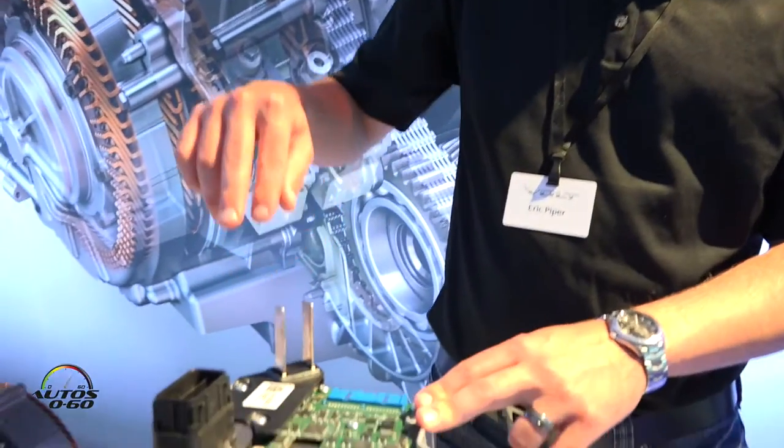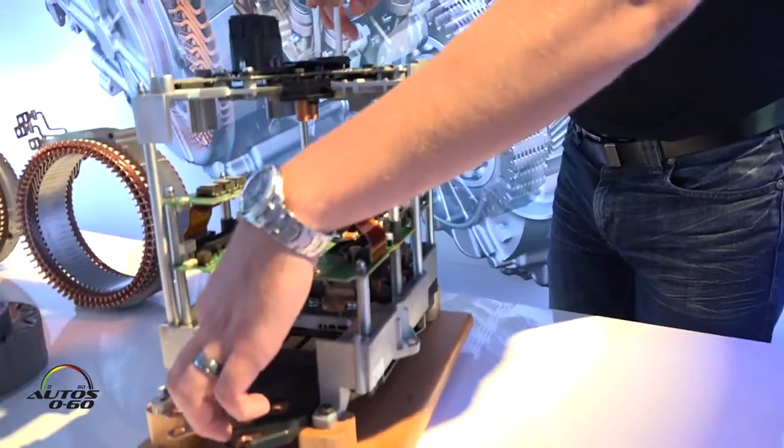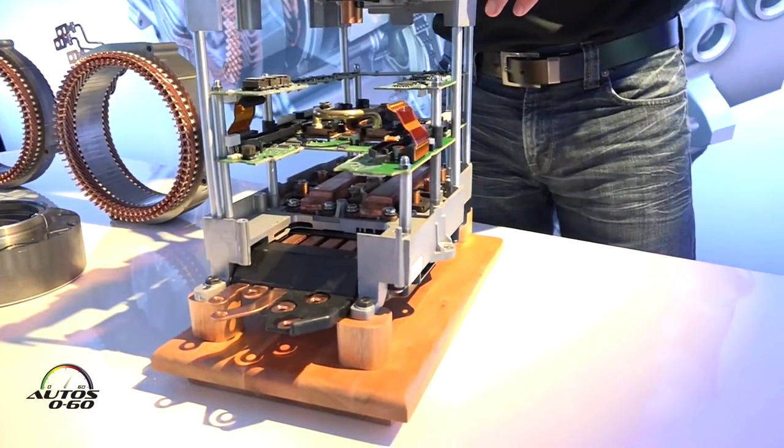We no longer have external high voltage cables between the two modules. We do direct connections. So we have DC power from our battery come in on these two and it leaves down here as three-phase AC power to our motors.